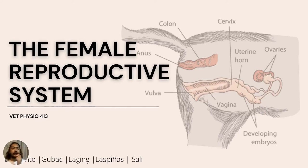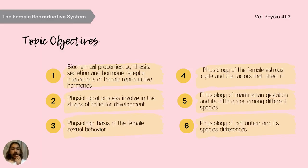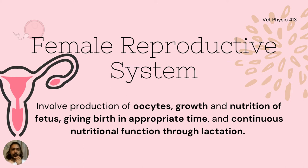In this day, we're going to discuss about the female reproductive system, mainly focusing on biochemical interaction of hormones, stages of follicular development, sexual behavior, estrous cycle, interspecies mammalian gestation, and parturition. The female reproductive system involves production of oocytes, growth and nutrition of fetus, giving birth at an appropriate time, and continuous nutritional function through lactation.